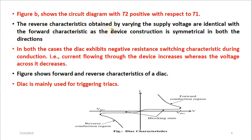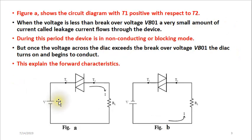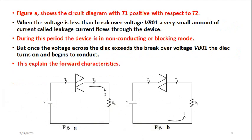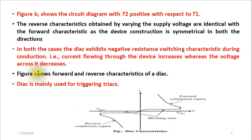The reverse characteristics of the DIAC are identical to the forward characteristics because the device is symmetrical. In whichever mode it is connected to conduct, it will give you a similar voltage-current relationship. In both cases — when T1 is positive and when T1 is negative — the DIAC will exhibit what we call negative resistance switching characteristics.